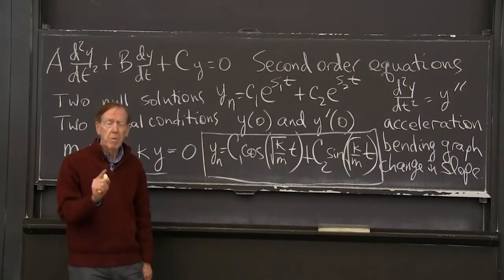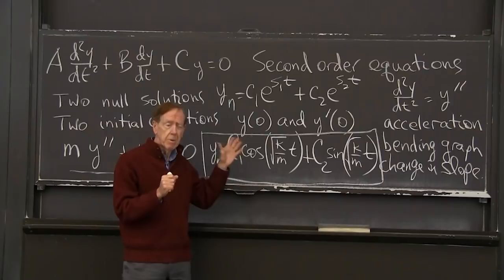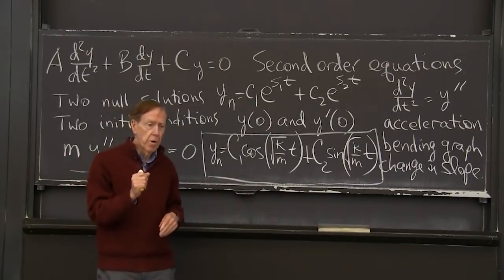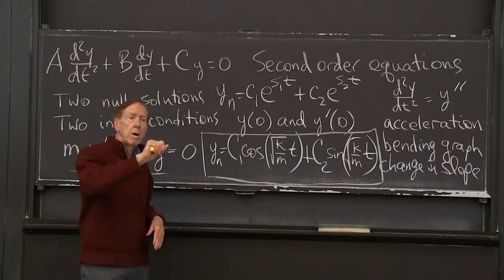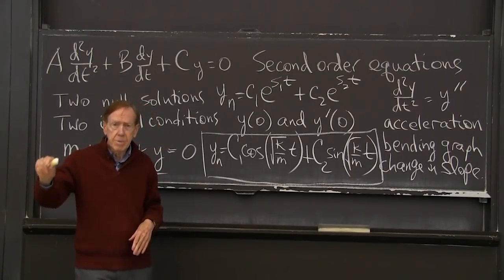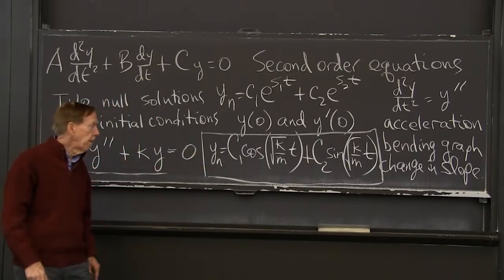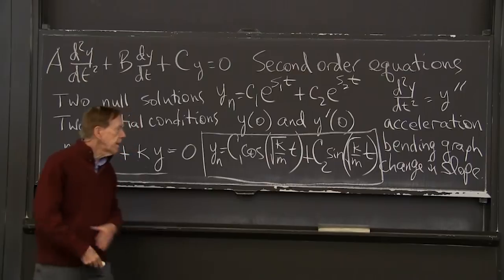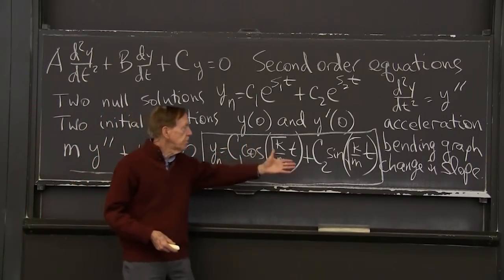Complex exponentials. Everybody remembers the big formula that allows complex numbers in here is Euler's formula: that the exponential of i omega t is the cosine plus i times the sine of omega t. I'll write it again. That's a solution.